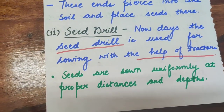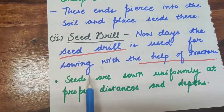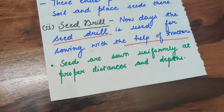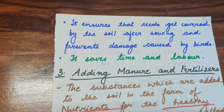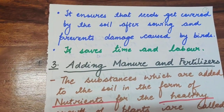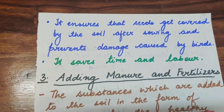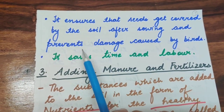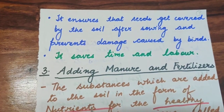Nowadays, a seed drill is used for sowing with the help of tractors. Seed drills sow seeds uniformly at proper distances and depths. A key advantage is that the seed drill ensures seeds get covered by soil after sowing, which prevents damage caused by birds eating the seeds. This also saves time and labor.